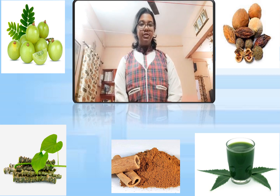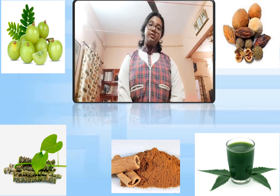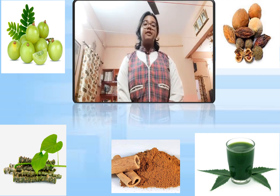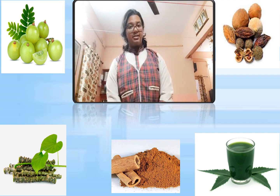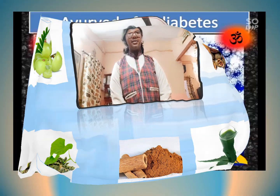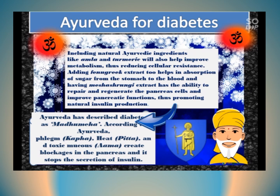Apart from a proper diet and regular physical exercise, Ayurveda also recommends amla, triphala, giloy, neem juice, and cinnamon powder as remedies to fight against diabetes. Ayurveda has described diabetes as 'madhumeha.'